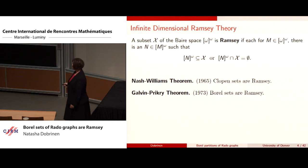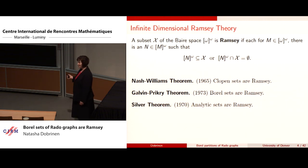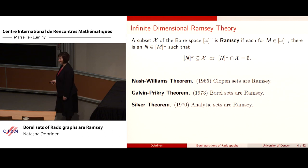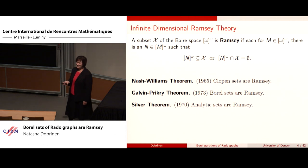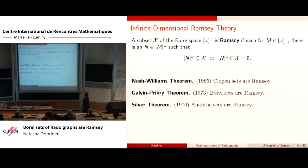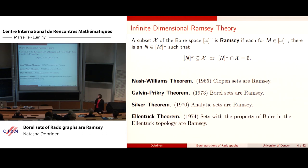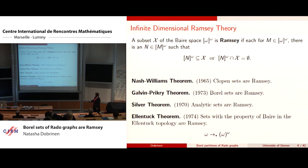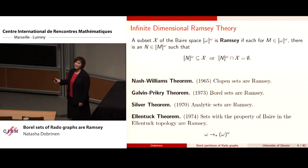The Galvin-Prikry theorem extended that to Borel sets. Silver's theorem says analytic sets are Ramsey. The culmination is Ellentuck's theorem: sets with the property of Baire in a refined topology are Ramsey. We use KPT notation where star means we're coloring definable subsets — 'definable' meaning having the property of Baire, or analytic, or Borel. This is the idea of infinite dimensional Ramsey theory on ω.